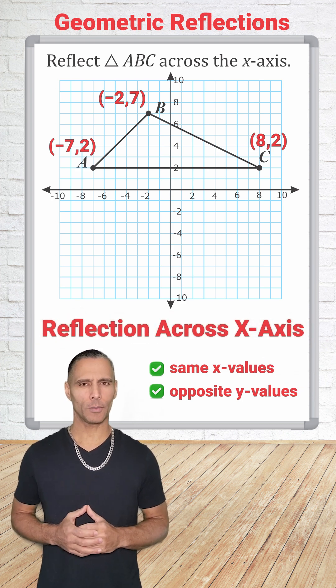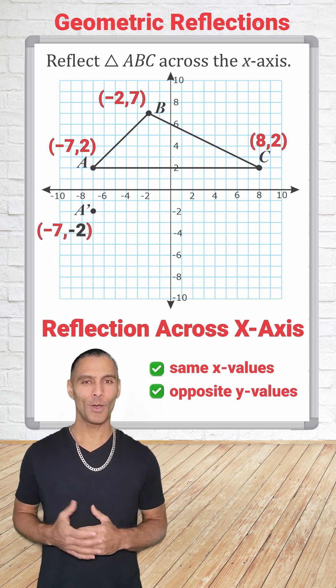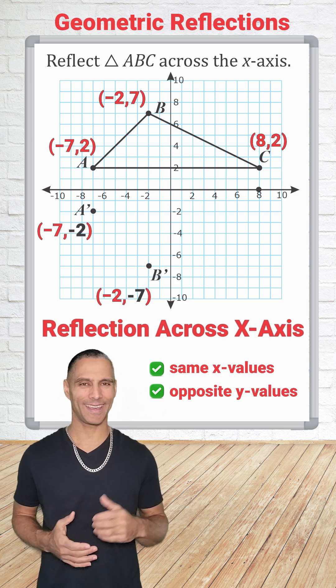So let's apply this transformation to each point. Point A is now negative 7, negative 2, point B is now negative 2, negative 7, and point C is now 8, negative 2.